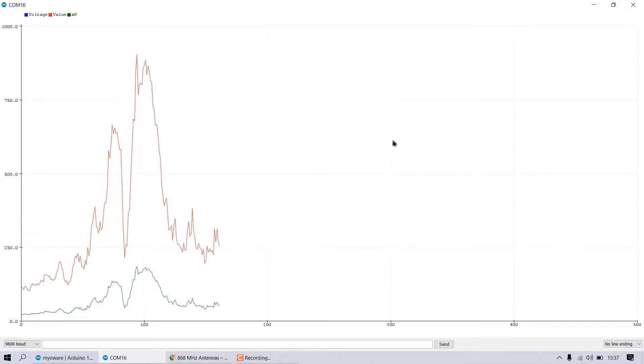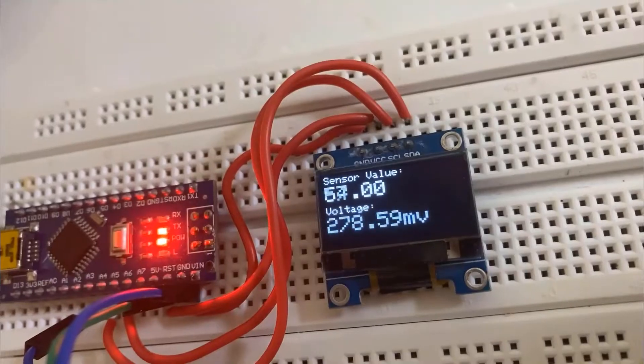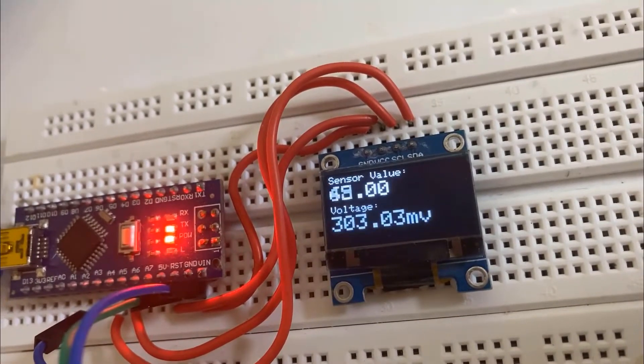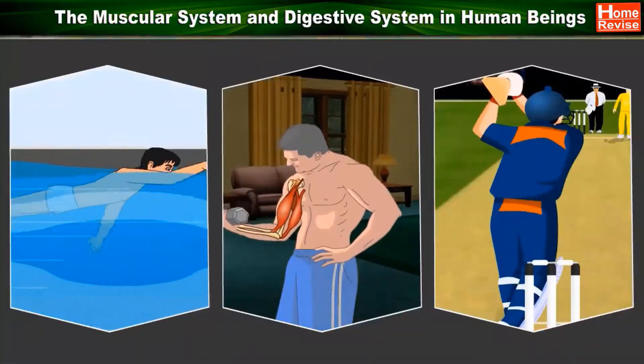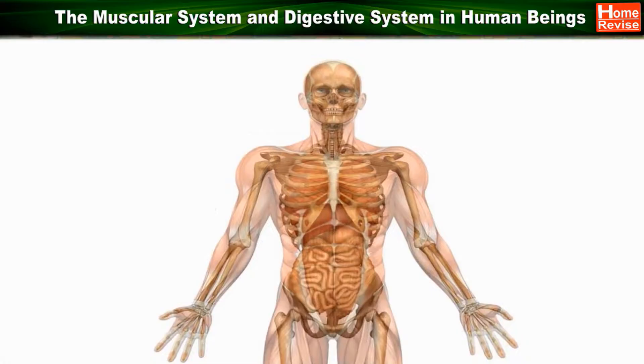You can also display a numeric value both on serial monitor or on any generic display device. From the graph, we can learn about the health condition of muscles and the nerve cells that control them. So, without getting any delay, let's get started.